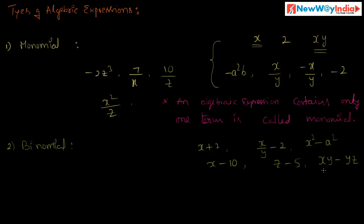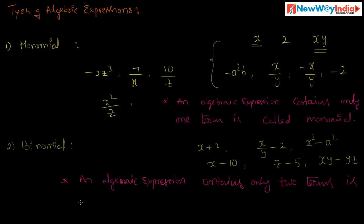These are all called binomials. If an algebraic expression contains two terms, it is called a binomial. An algebraic expression that contains only two terms is called a binomial.